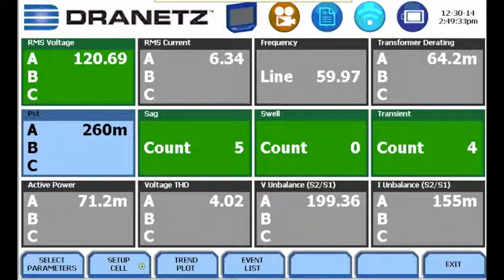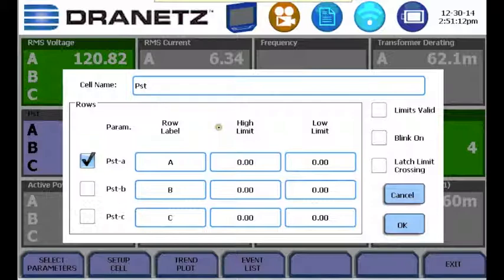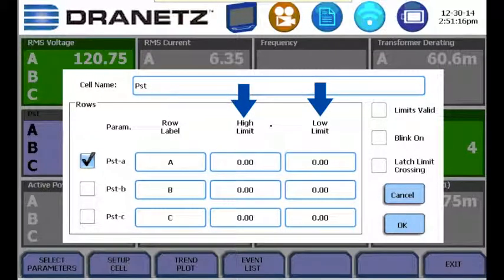To set up a box, click the setup cell button. The setup cell button allows you to change certain characteristics of the cell such as the cell name, the row label, and the high and low limits that are used to trigger the color coding.